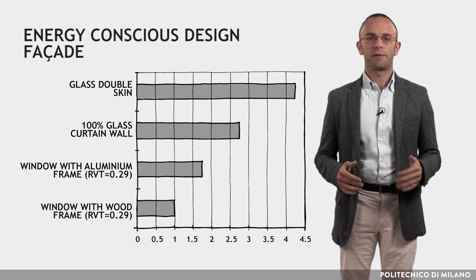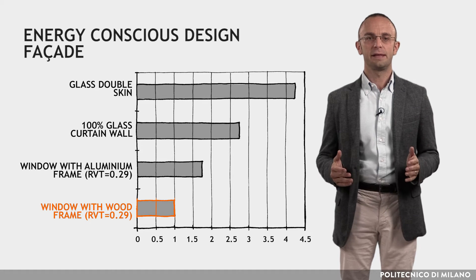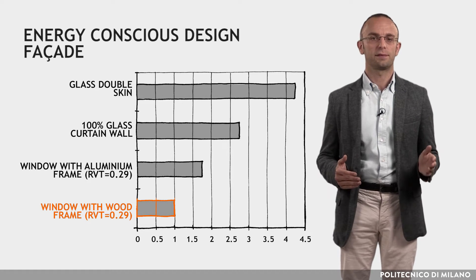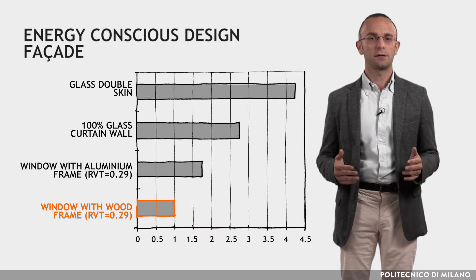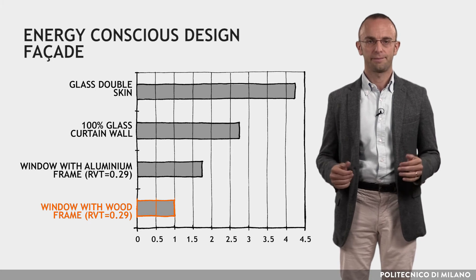The value of a façade with a wood frame is assumed as 1. RVT is the ratio between the glazed surface and the total surface of the façade.